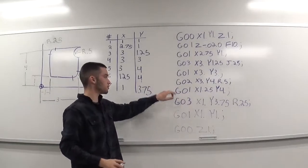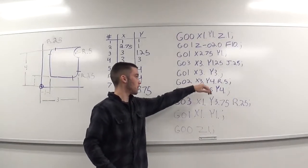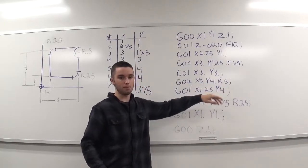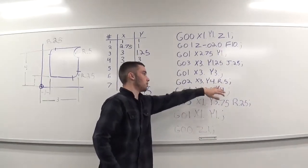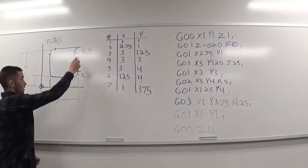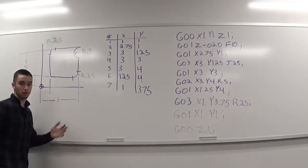Then, we'll be calling up your G02 with an x of 3, y of 4. And then, we'll be using our R method for this one with a 0.5, which is your half-inch radius. So, bada bing, bada boom, there it is.